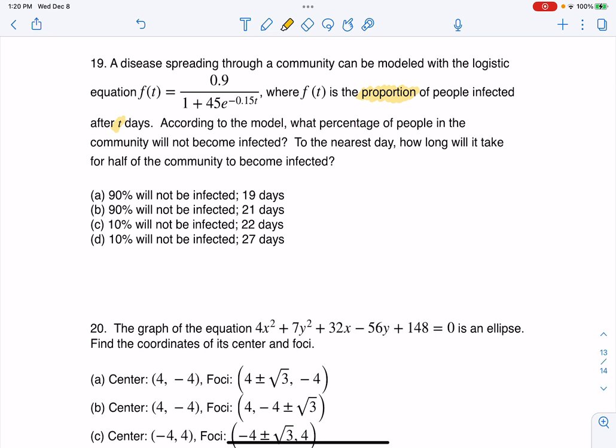According to the model, what percentage of people will not become infected? All right, so I want you to see this is the complement to that. This is the proportion of people that will be infected, but they're asking us for the folks that won't be infected. And to the nearest day, how long will it take for half of the community to become infected?